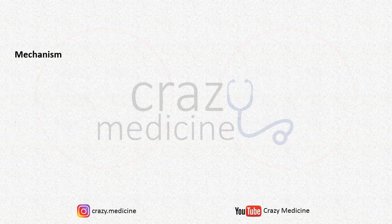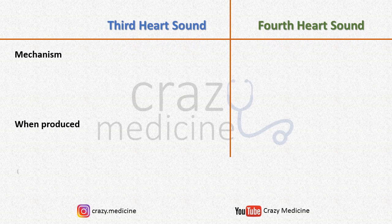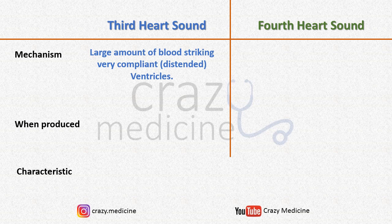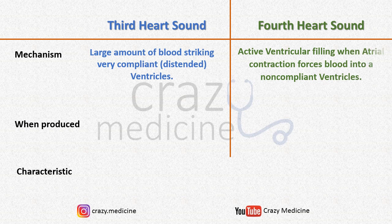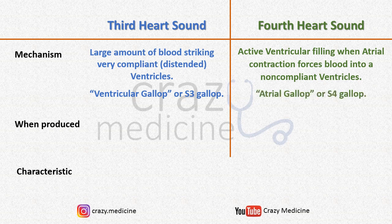We will learn about the mechanism, when S3 and S4 are produced, their characteristics, and conditions where S3 and S4 are heard. S3 is produced due to a large volume of blood striking very compliant — or dilated, less resistant — ventricles. S4 is produced due to active ventricular filling when atrial contraction forces blood into non-compliant ventricles. S3 is due to rapid filling of compliant ventricles, so it is also called ventricular gallop or S3 gallop. S4 is due to atrial contraction, so it is also called atrial gallop or S4 gallop.